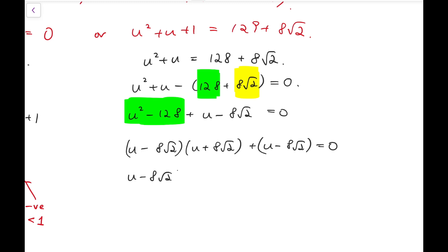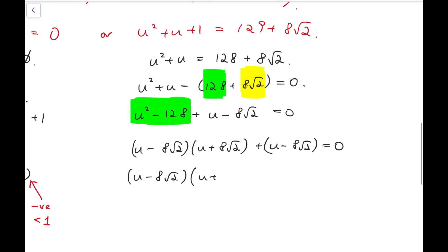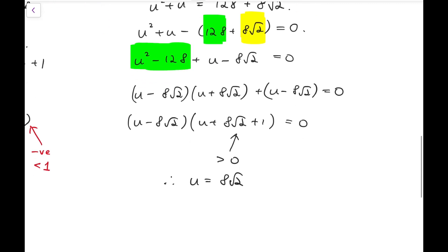So I can take out a common factor, and then I'll have u plus 8 root 2 plus 1 equal to 0. Now, this is always positive because u is positive as explained in the first case. So therefore, u equal to 8 root 2.